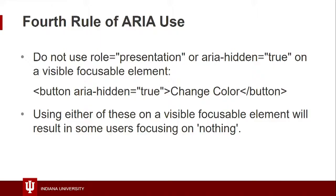The fourth rule of ARIA use is not to use role equals presentation or ARIA hidden on a visible and focusable element. For instance, a button with aria-hidden equal to true — it's still in the DOM, it's a button and natively keyboard accessible, so a user can tab to it with a screen reader. But it won't announce anything — it'll be silent because the screen reader is told there's nothing there. They've essentially hit a black hole, and if there are many such controls, the screen reader could get stuck or the user may assume their screen reader has crashed.